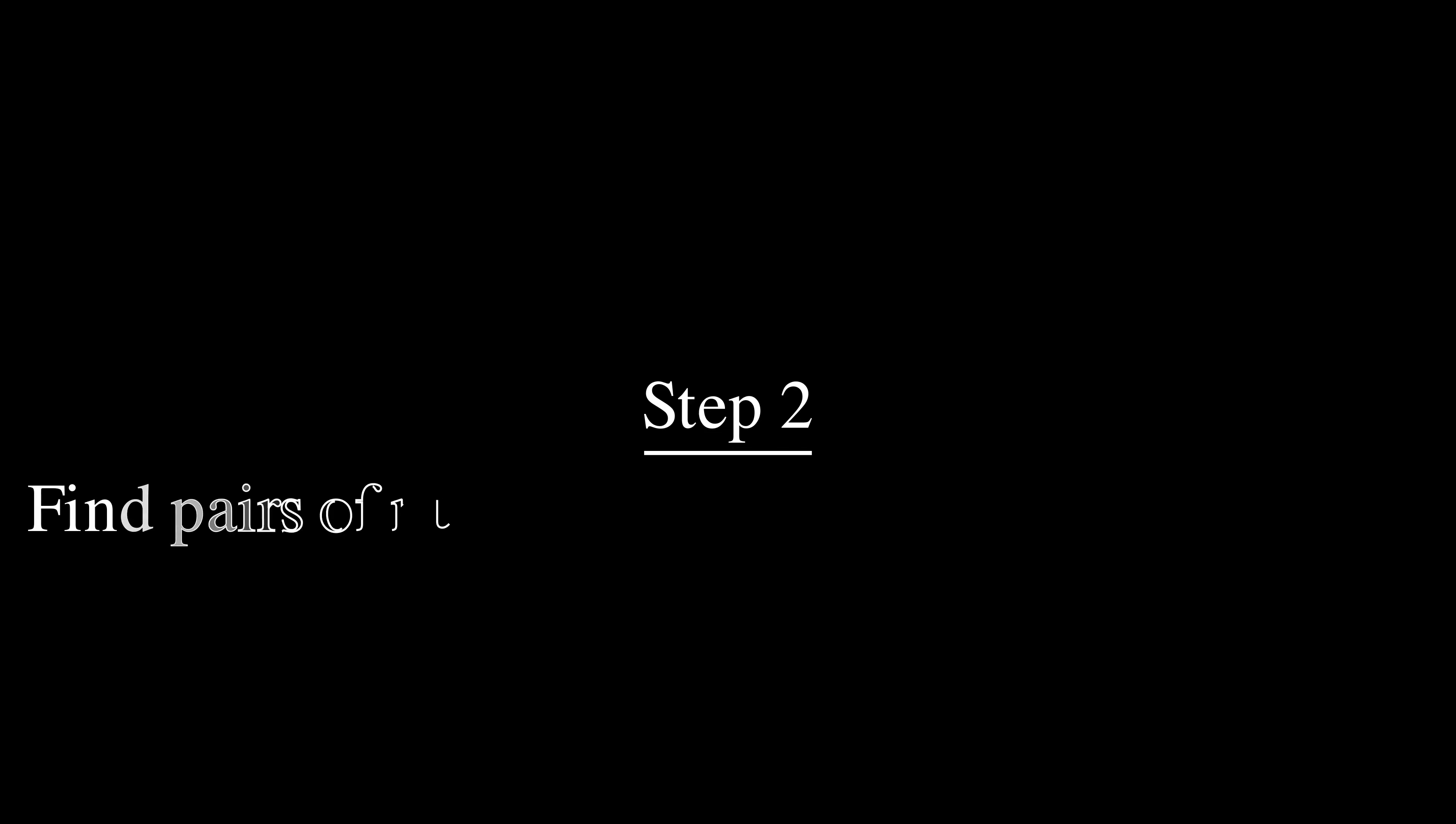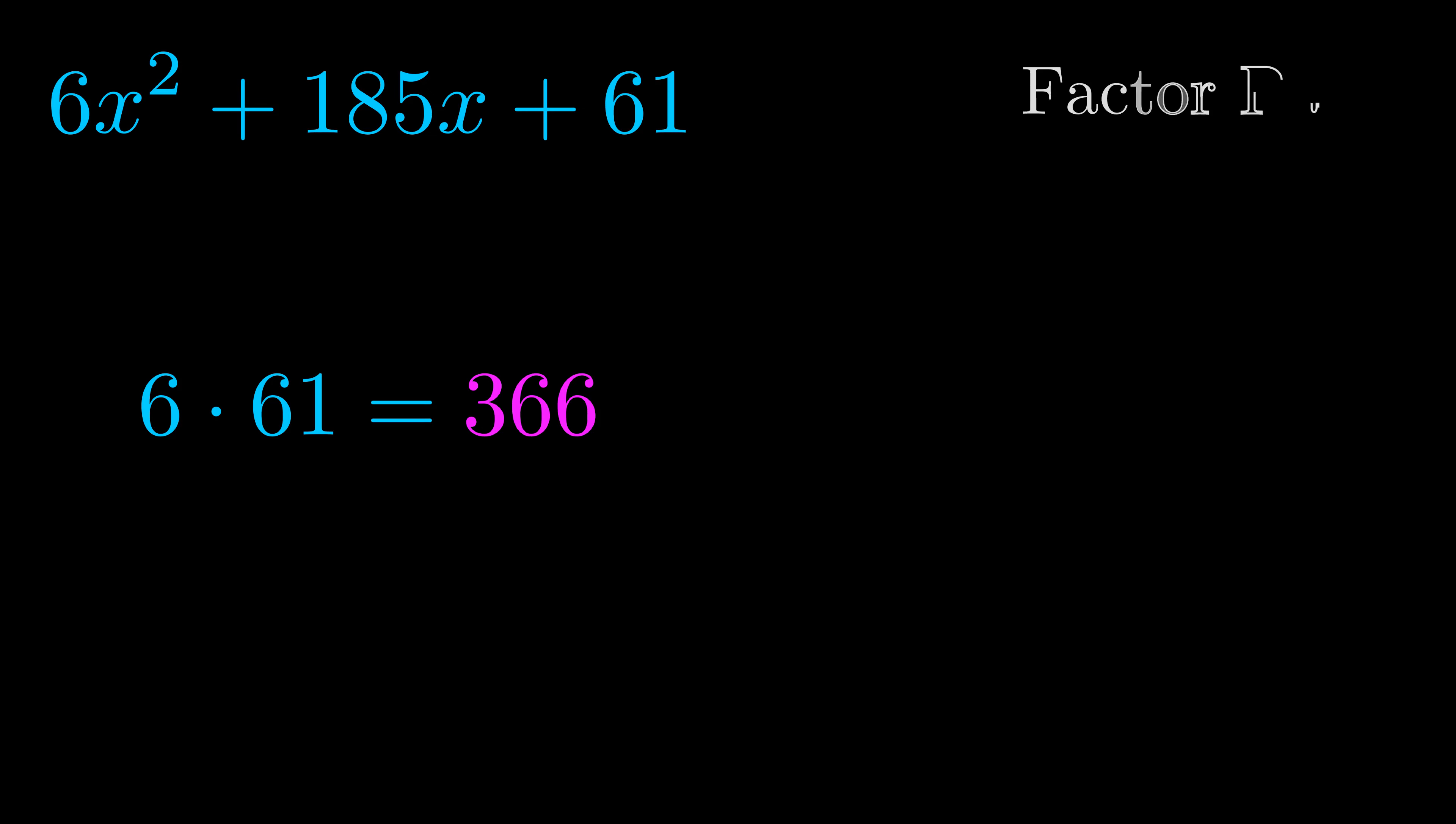Step two is to try to find all of the pairs which multiply to this number. Now it turns out you don't really need to find all of them but go ahead and write down as many numbers as you can that multiply to the magenta value for now. Pause the video and resume when you're ready to continue. Okay here's what I came up with.